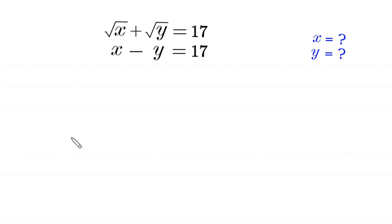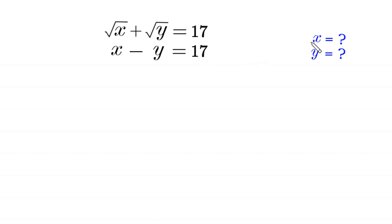Hello, welcome. Let us solve this very nice system of equations. The square root of x plus the square root of y is equal to 17, and x minus y is equal to 17. We need to find the values of x and y.